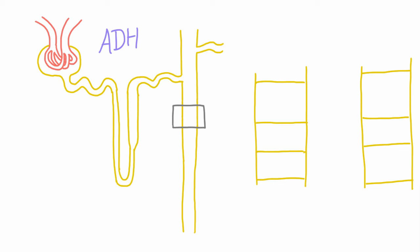And what ADH does is it comes over, and we'll draw it as these little circles, and it binds to receptors on the principal cells in the collecting duct. So not the intercalated cells, but the principal cells.